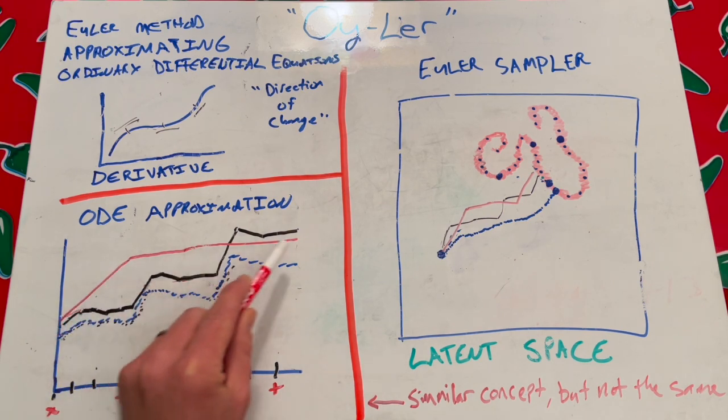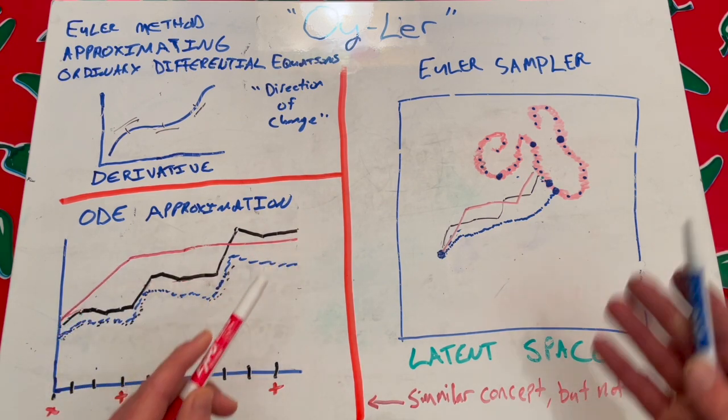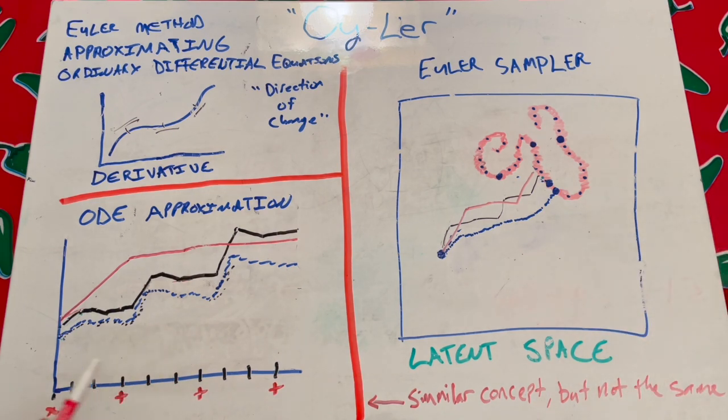If I get a bigger step size, I get a different error, kind of like you get a different result with different step sizes with the Euler sampler.